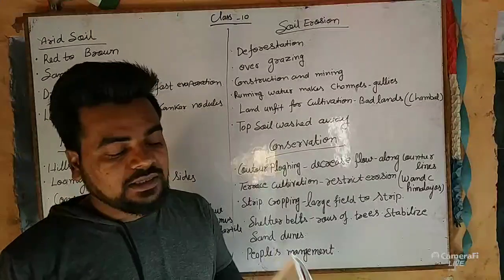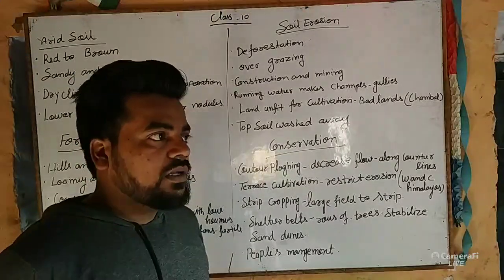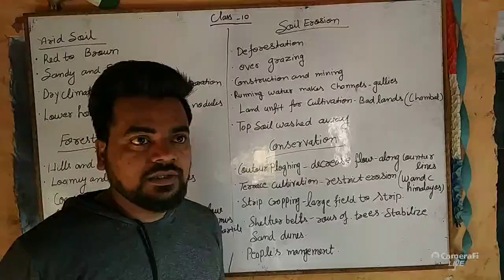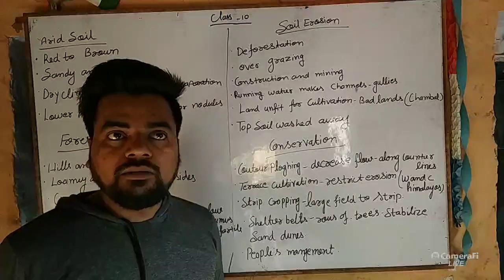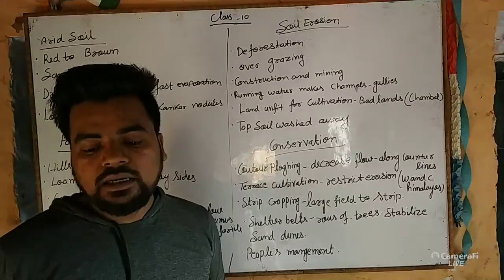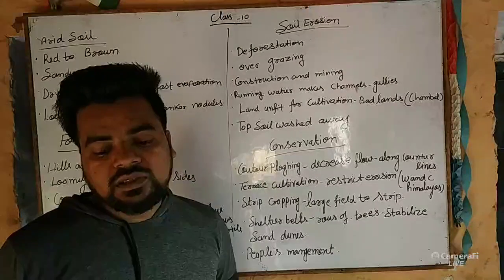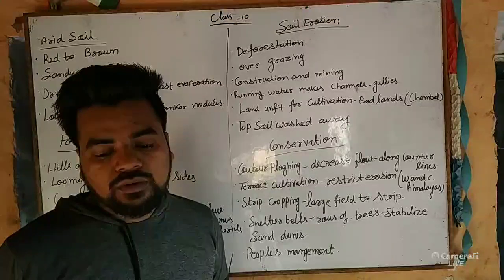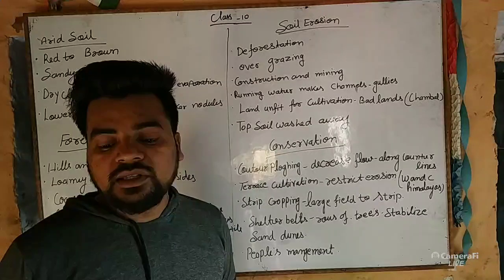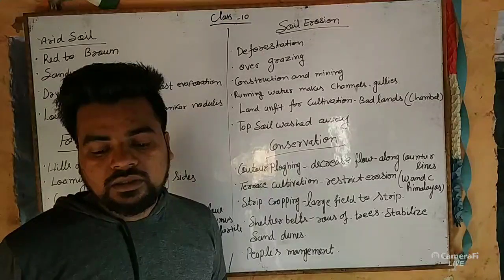The soil texture varies according to the mountain environment where they formed. They are loamy and silty on valley sides and coarse-grained on the upper slopes. In snow-covered areas, these soils experience denudation and are acidic with low humus content.